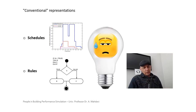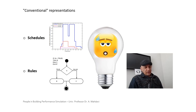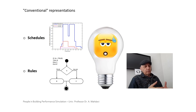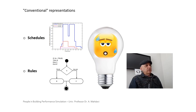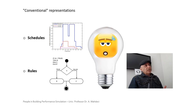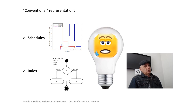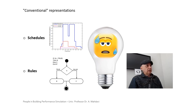This has led to criticism. Some time ago, a colleague suggested that the traditional approach of representing people is to represent them as basically sweating light bulbs, referring to the latent and sensible heat generation. The suggestion is that these conventional approaches have been too simplistic and have been criticized on that basis.